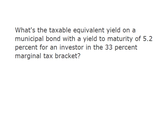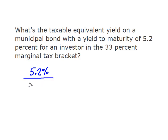So we have a municipal bond with a yield to maturity of 5.2% and we have an investor who's in a 33% marginal tax bracket. It's pretty easy to calculate. What we do is we take the municipal bond yield of 5.2% and divide it by 1 minus that tax rate.